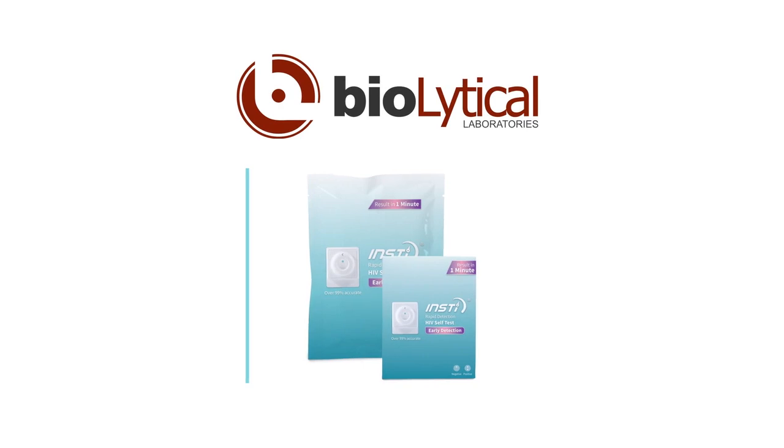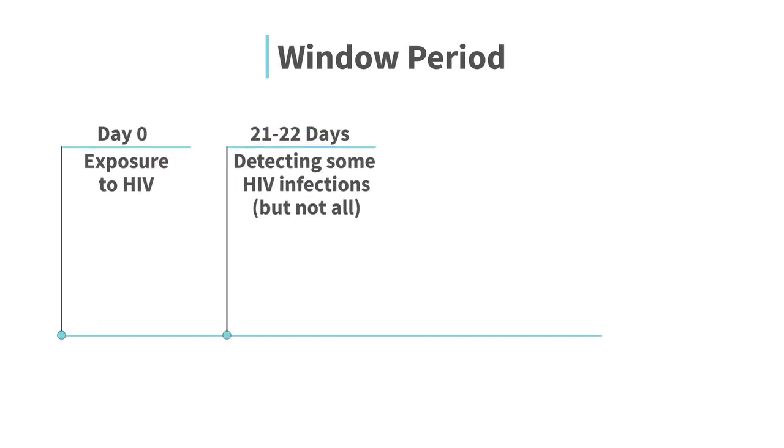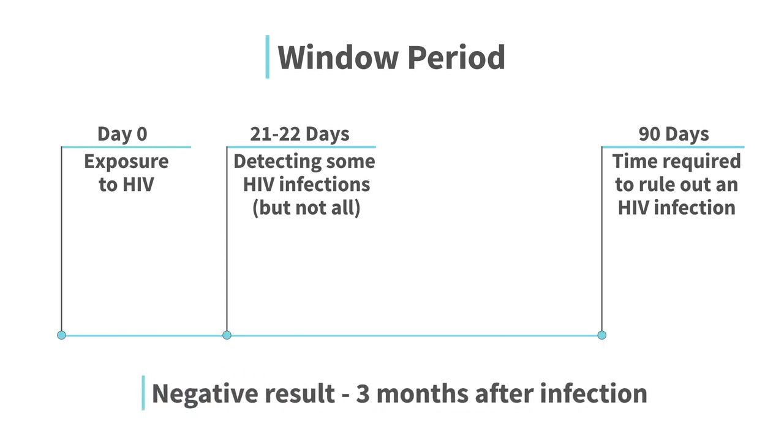Your INSTI HIV self-test is simple to perform and very accurate. You may test positive with INSTI HIV self-test in as little as 21 to 22 days after infection. However, it can take as long as 3 months to produce a positive result. A negative result may not be accurate until 3 months after the infection.